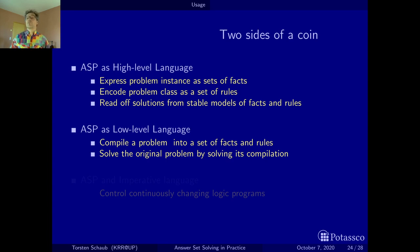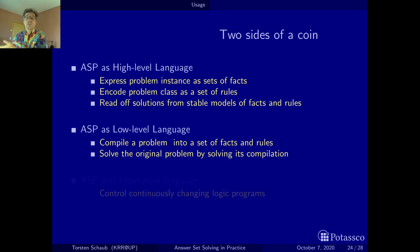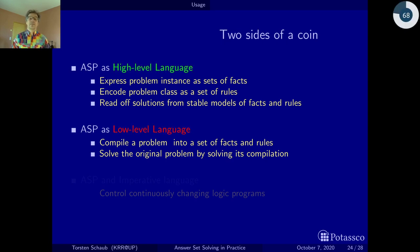There is a criterion called elaboration tolerance, which we will look at later, where the idea is: what makes a good knowledge representation language? It is when a small change in the real world is reflected by a small change in the representation of the problem in the language. If you bury the representation of the problem in a compiler, you're back to programming. So we would highly recommend the first approach and not the latter.